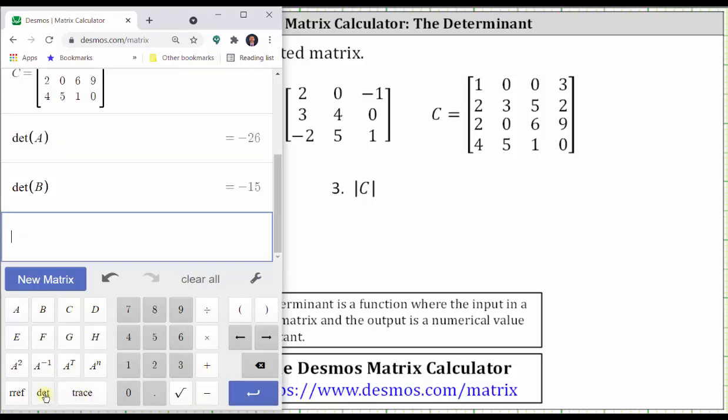And then finally, the determinant of matrix C, which is negative 30.